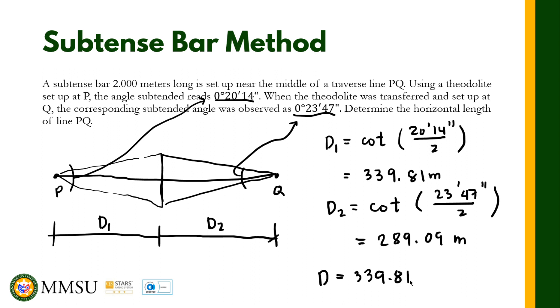Therefore, the total distance from point P to Q is just the sum of the two horizontal distances, and so the distance is approximately 628.90 meters.